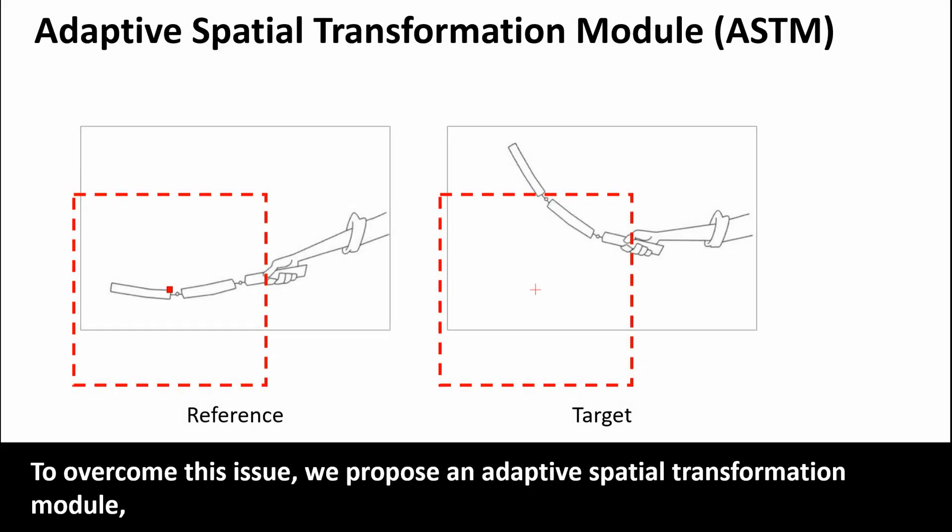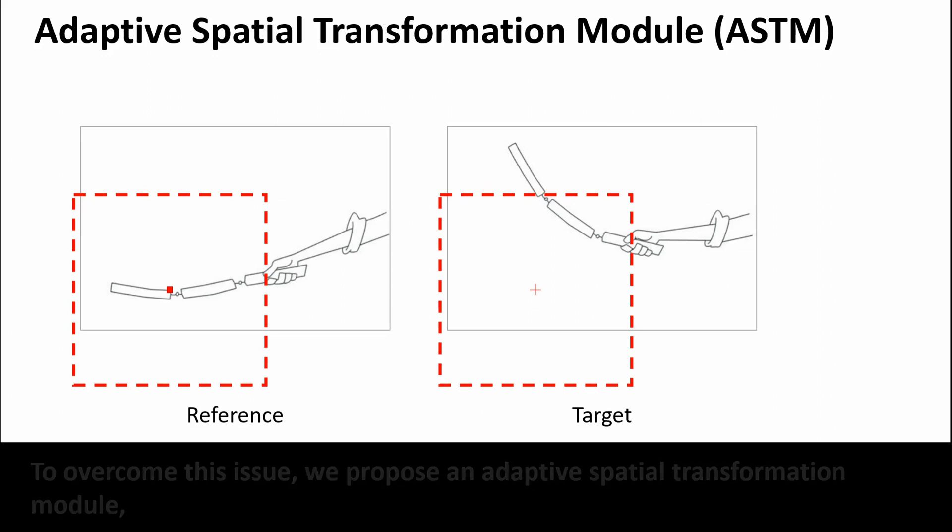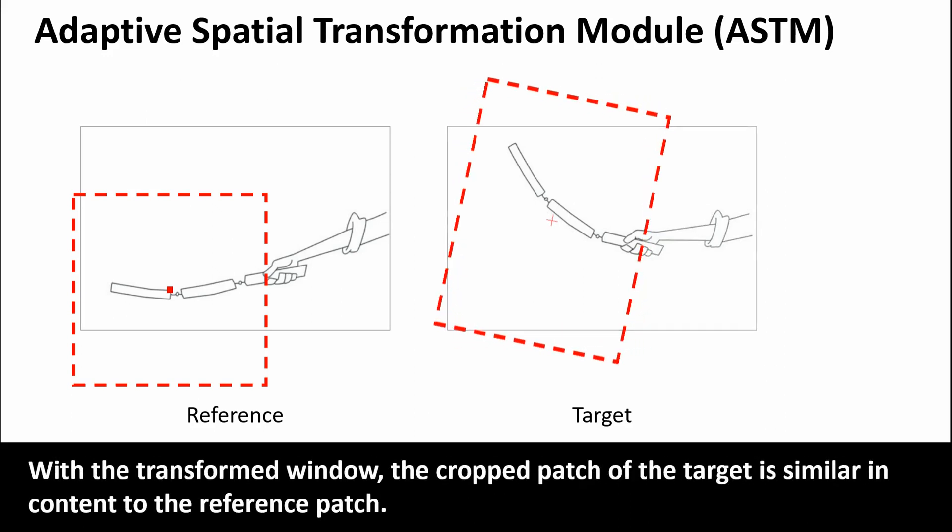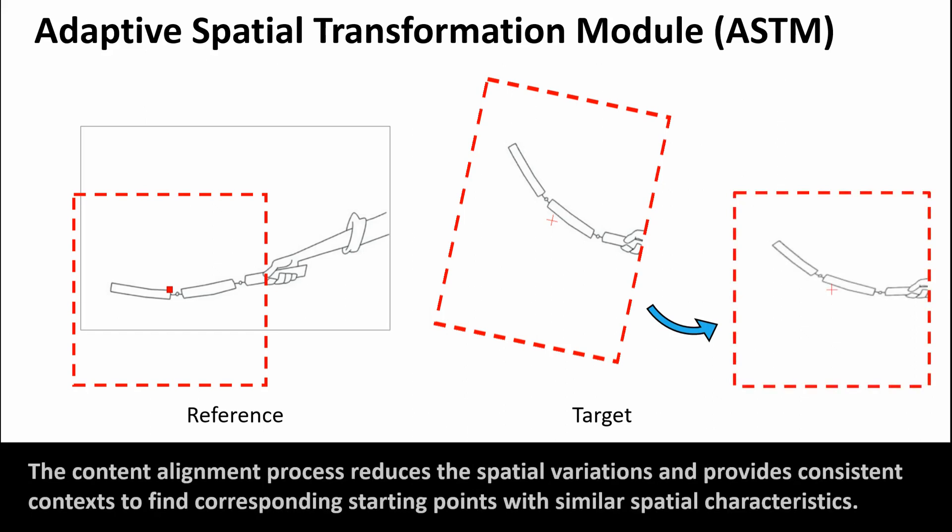To overcome this issue, we propose an adaptive spatial transformation module which predicts a spatial transformation for the processing window in the target. With the transformed window, the cropped patch of the target is similar in content to the reference patch.